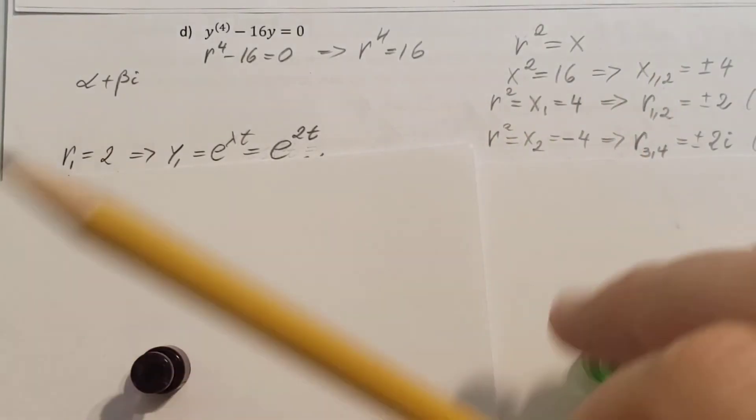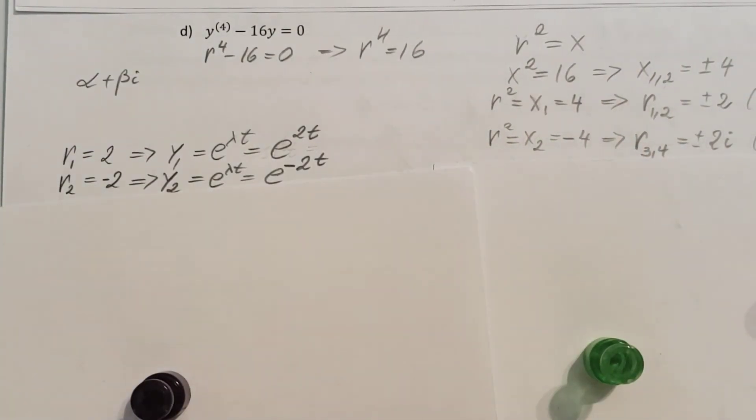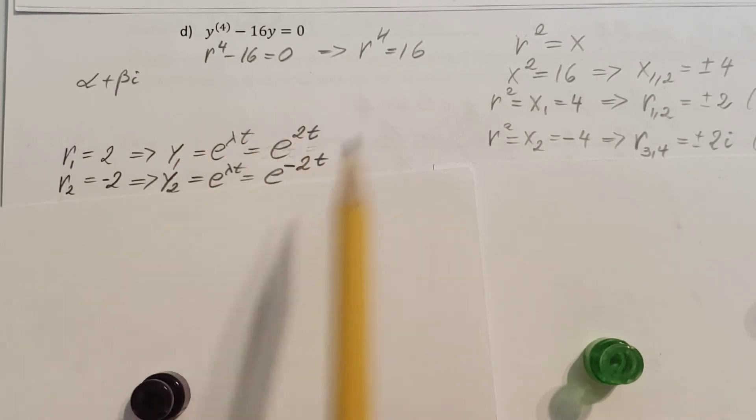My second root is r2 equals negative 2. That's gonna give me y2 equals e to the lambda t, where the lambda is now negative 2. So, e to the negative 2t.